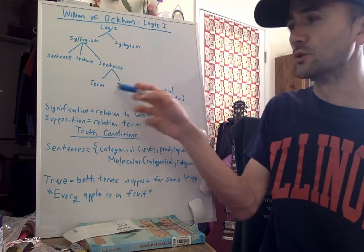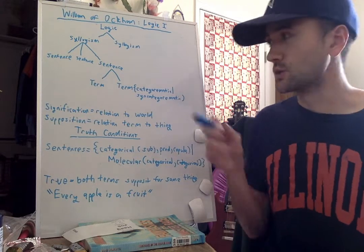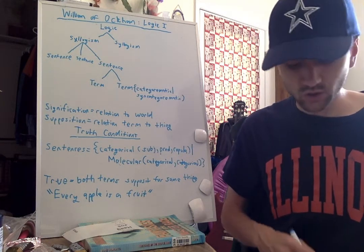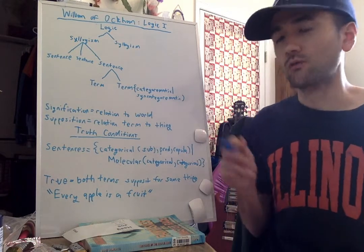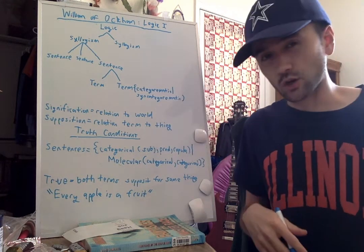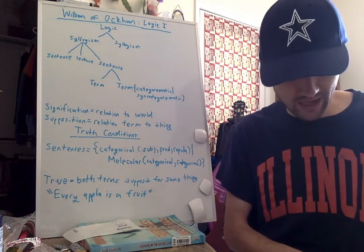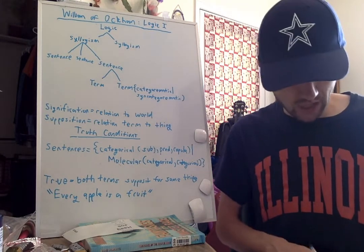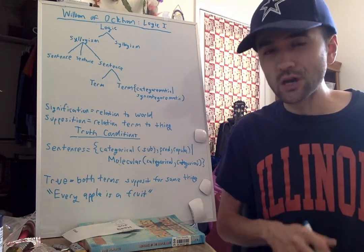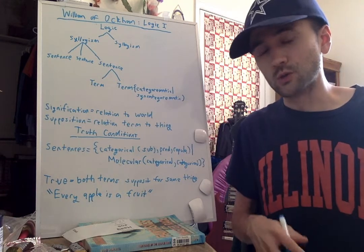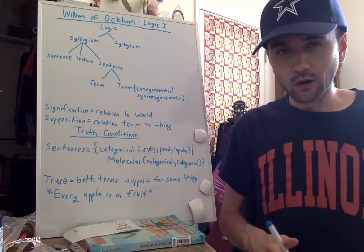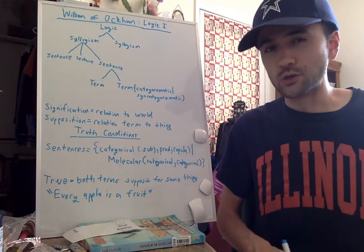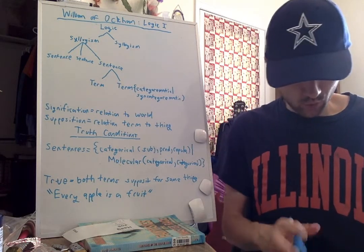Sentences decompose down to terms, and terms can be of two varieties: categorematic terms, which have an independent signification, and syncategorematic terms, which don't have independent signification but provide modification. Examples of syncategorematic terms are words like 'and,' 'or,' 'because,' 'not' - not really independent meanings but modifications. The meaning of a categorematic term is fixed, and a term has a relation to a thing out there in the world.